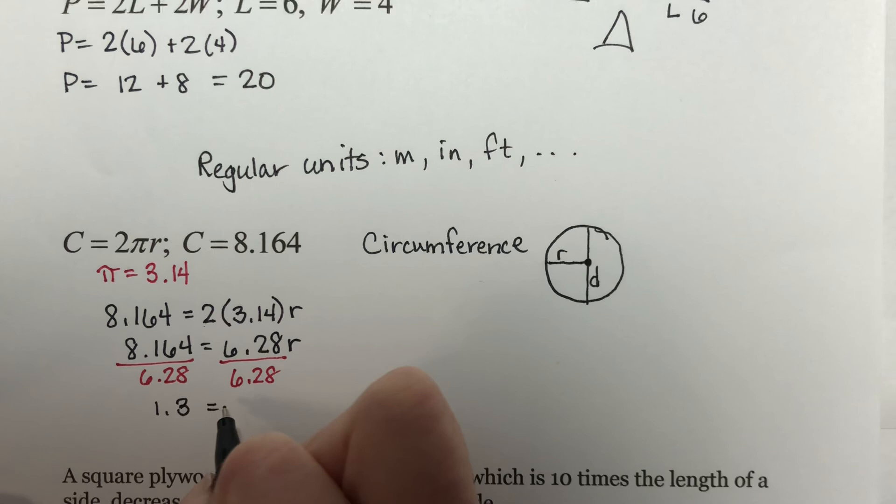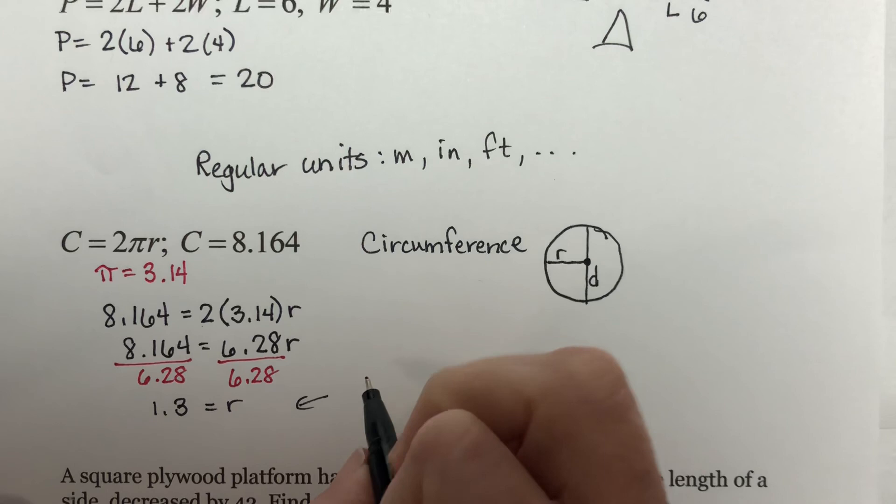And you will get 1.3 is your radius. Okay? And again, these are in regular units. Circumferences are measured in regular units.